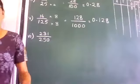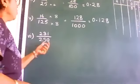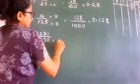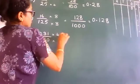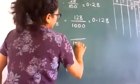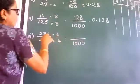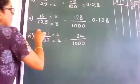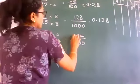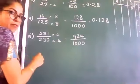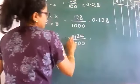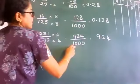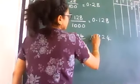Now 231 upon 250. How do we change 250 now? 250 also multiplied by 4 will give you 1000. So this also needs to be multiplied by 4. 4 ones are 4. 4 threes are 12, 2 carry 1. 4 twos are 8 and 1, 9. So 924 upon 1000. 3 digits. Write the numerator, 3 digits. So after the point, 3 digits.